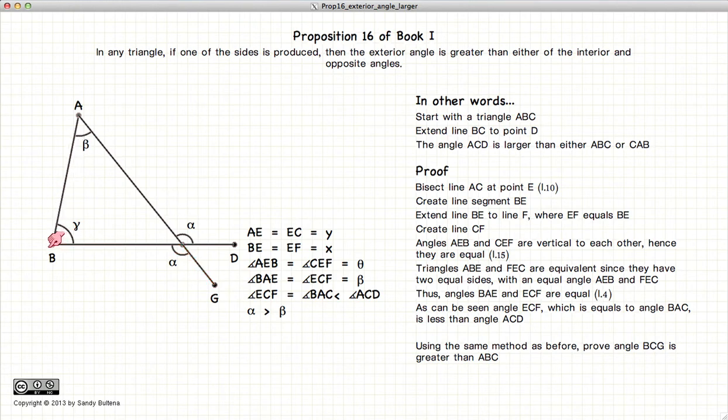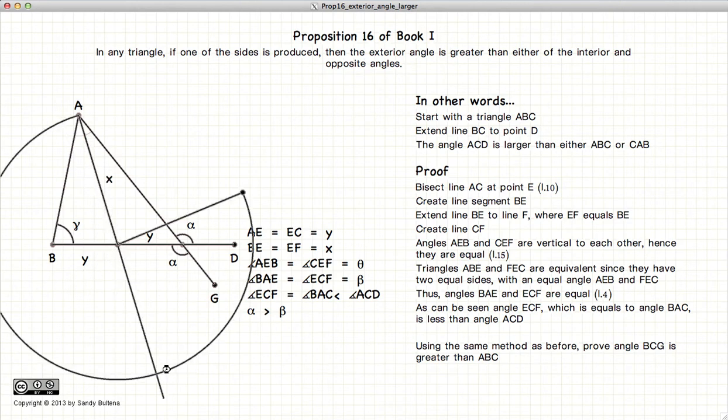Now, what we're going to do again is bisect the line BE. Draw a line from A to E, extend it further on, such that we have two line segments of equal length. Connect this point to point E.